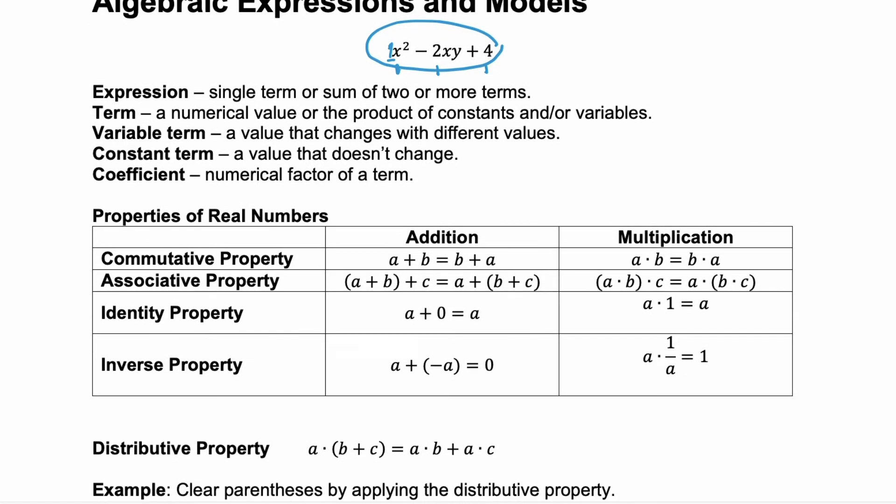Next we have a chart that summarizes some of the properties of real numbers. We have the commutative property which says you can add or multiply in either direction so a plus b is the same as b plus a. Likewise a times b is the same as b times a.